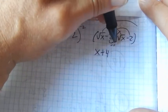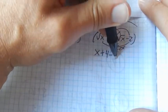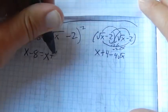Negative 2 times negative 2 is 4. And then I have negative 2 root x, negative 2 root x, minus 4 root x. So notice I didn't entirely get rid of the square root when I did that.